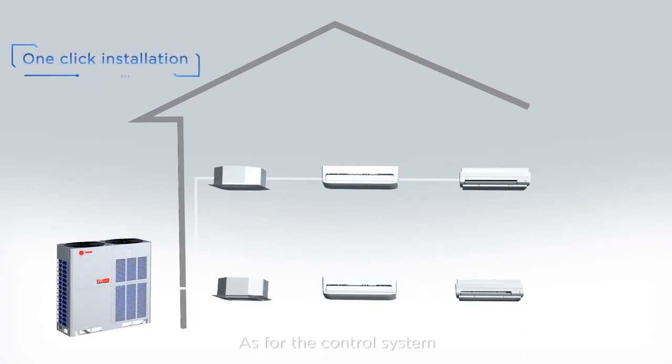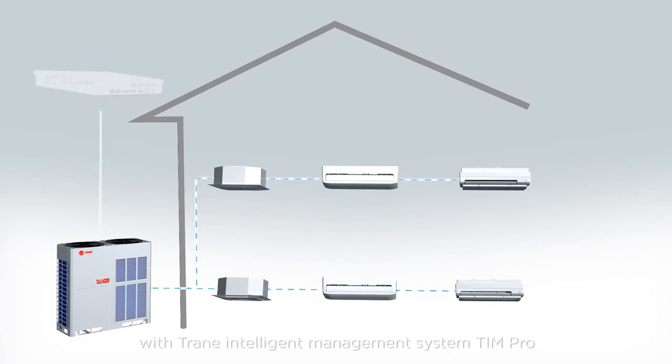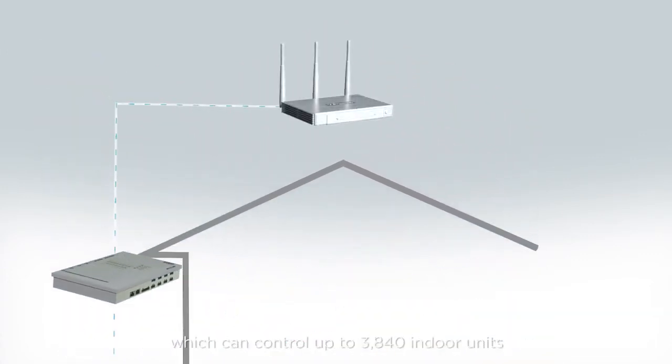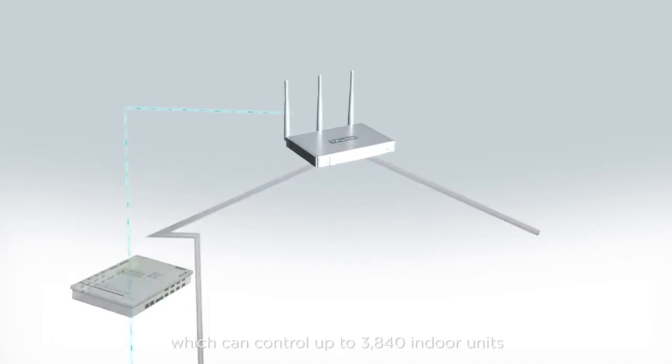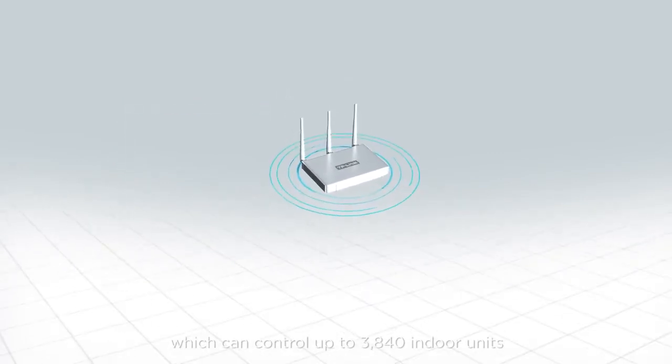As for the control system, it's possible to have connectivity with Train Intelligent Management System TIM Pro, which can control up to 3,840 indoor units in one system.